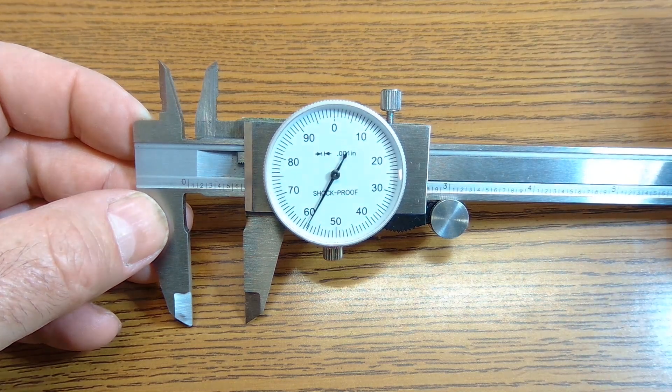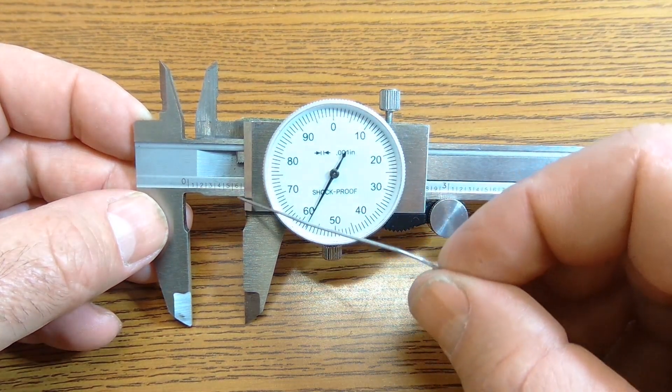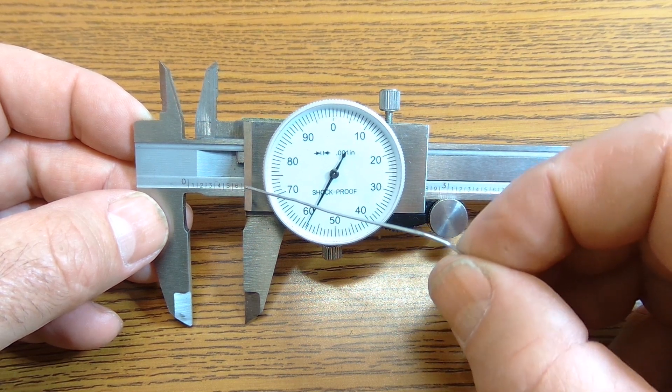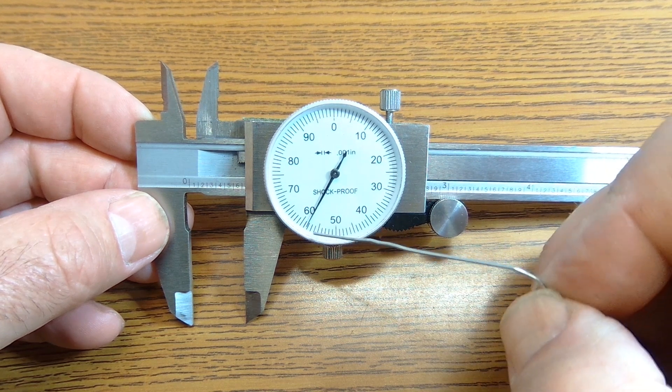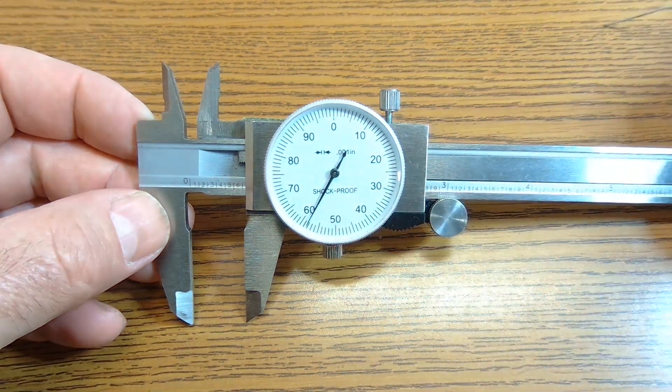So pause the video, figure out this measurement, and then I'll go over it. I look on the bar here, I see the six. The line for the six is after it, so this is 0.658. So six hundred fifty-eight thousandths.